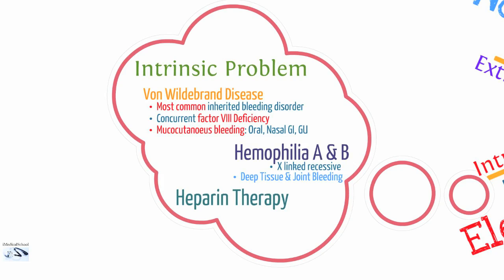An important point about von Willebrand disease is that it causes mucocutaneous bleeding — meaning bleeding from the oral, nasal, GI, and GU mucosa. This helps separate it from other bleeding disorders. Hemophilia A and B involve deficiencies in factors VIII and IX respectively; they are X-linked recessive disorders and cause deep tissue and joint bleeding. So the pattern of bleeding differentiates them: von Willebrand causes mucocutaneous bleeding, hemophilia causes deep tissue and joint bleeding. Also, heparin therapy can prolong the PTT through its effects on these factors, and we monitor heparin therapy with PTT in the hospital.